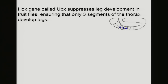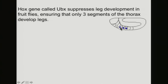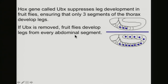The last example I want to show you is called UBX. This is a Hox gene that suppresses leg development in fruit flies. This particular gene regulates how many legs the developing fly will have. It turns on just these three segments of the thorax so that they develop legs. Out of three segments in what will eventually become the thorax, legs will appear. If you turn off the effects of that UBX gene, then the fruit flies will develop legs out of every single segment and they'll grow up with dozens of legs, not just six.